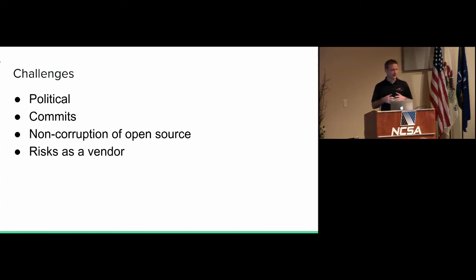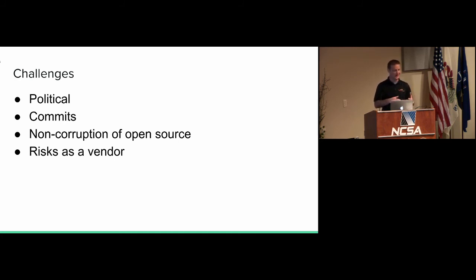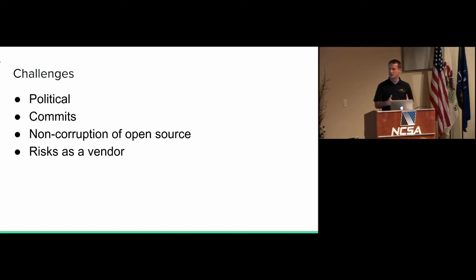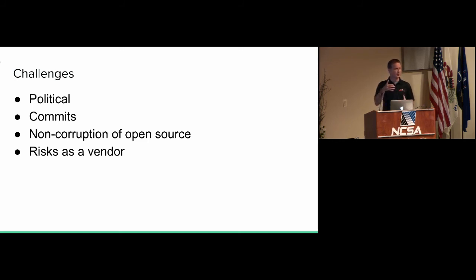The challenges around contributing internally: there are political issues. We can't release things for IP reasons, or because it's classified if you're in government spaces. You have issues with commits — you want to participate, commit code, send it back, but you can't clear the political hurdles. It's a circular pain loop. And there's the issue of whether you're going to corrupt an open source project by committing something — if you're changing the tenor of that project because of a single commit or group of commits, that's usually bad. As a vendor, productizing and selling Bro, you have a risk of putting code out there and what that does to paying your bills and expanding your business.